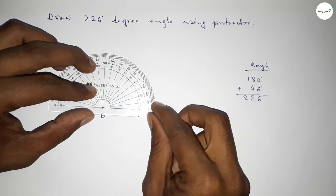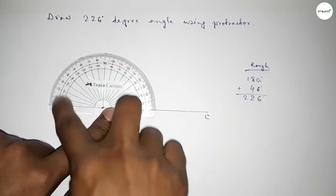So first we have to count 180 degree angle on point B. So putting the protractor on point B and counting, so this is 180 degree.